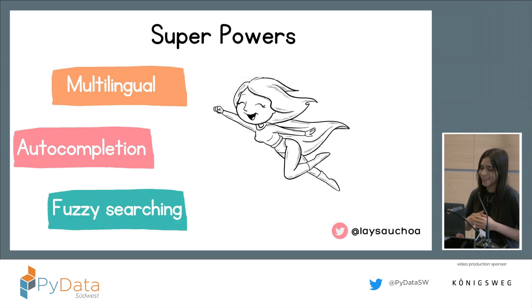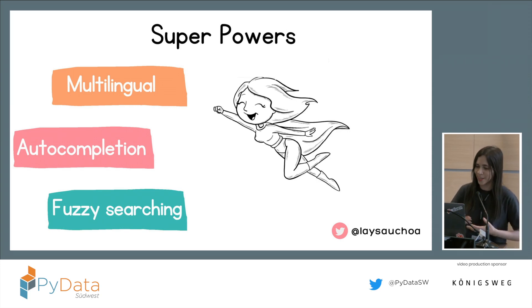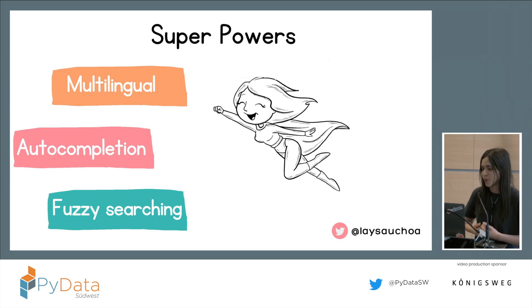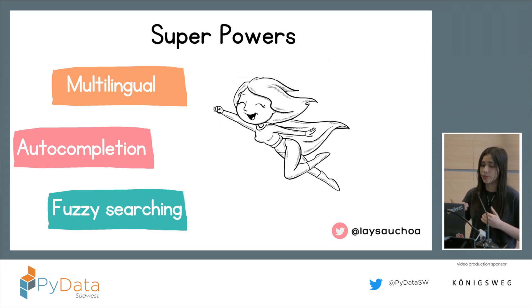And you can imagine — if OpenSearch were a superhero who could read so many languages, could it also understand broken English? Yes. If you query with wrong spelling or a mistype, you can configure OpenSearch for fuzzy searching so you can still get results.